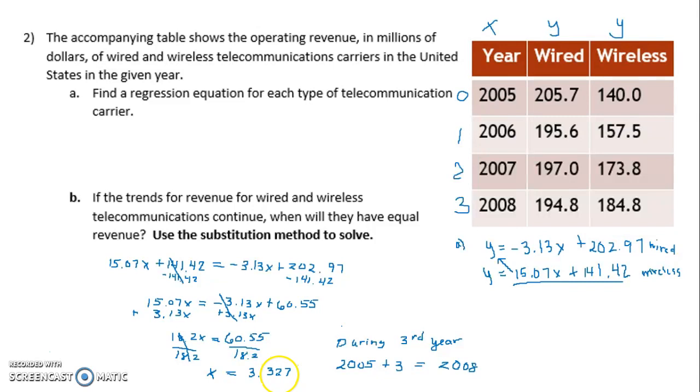If I was asked what the equal revenue was, I could take this value of 3.327 and put it into either equation for the X. So I kind of wanted to know, so I did that. So I took the 15.07, multiplied it by the 3.327, replacing the X, and added the 141.42. So when I did that math, so this is really giving me Y equals, plugged in the X value, Y equals, I came up with 191.55, etc., the decimal went on.